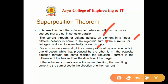We have to find out the currents or voltages produced independently by each source. For a two-source network, if the current produced by one source is in one direction while that produced by the other is in the opposite direction through the same resistor, the resulting current is the difference of the two and has the direction of the larger one.